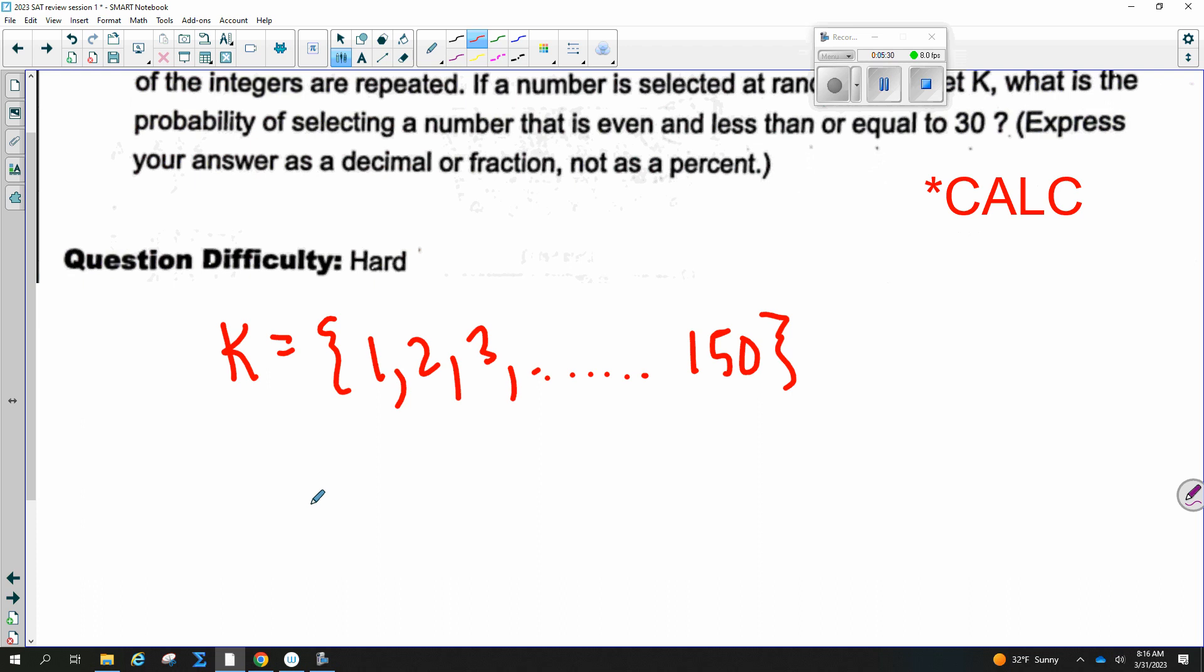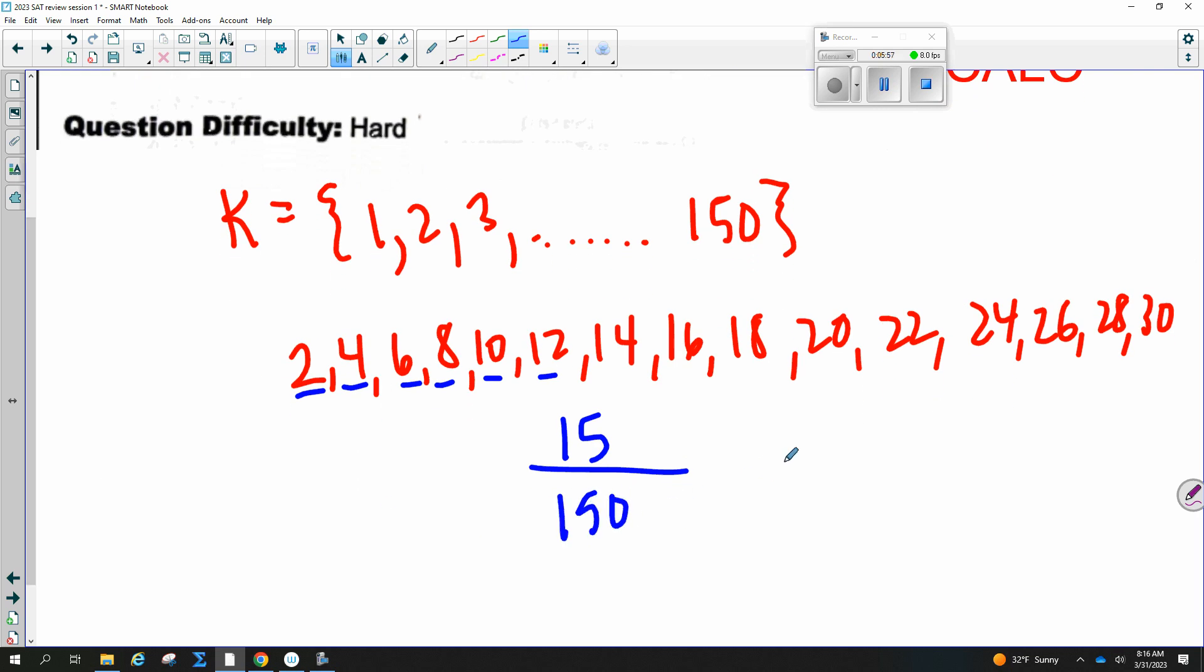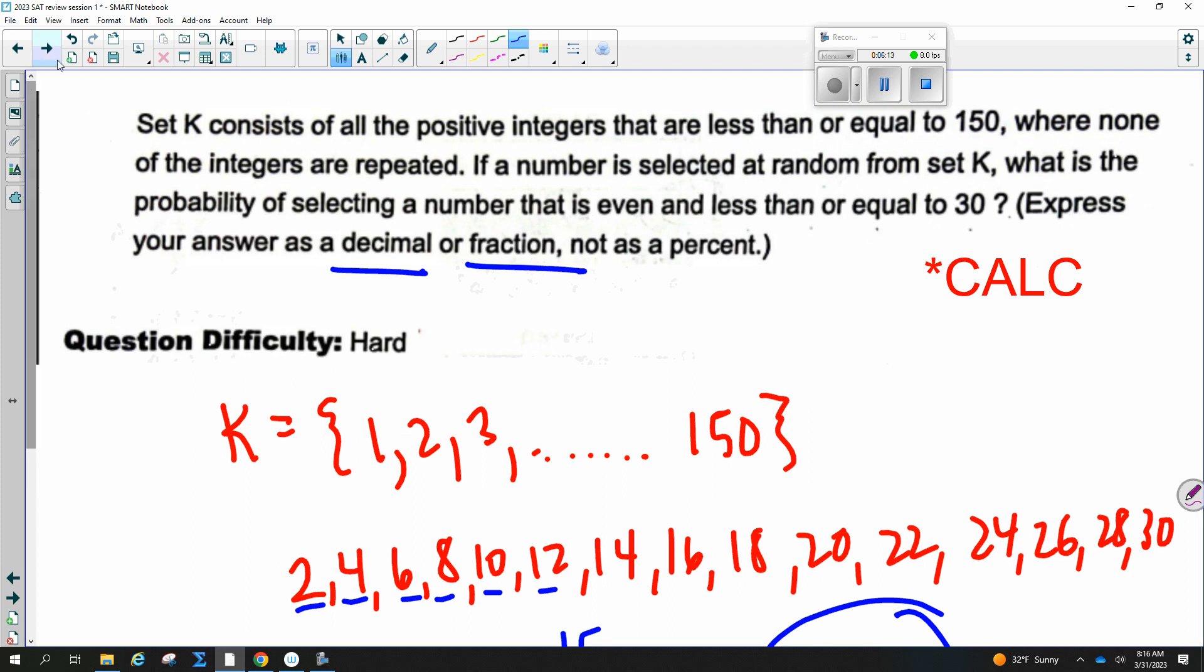So the even numbers that are less than or equal to 30. So how many are there? 2, 4, 6, 8, 10, 12, 14, 16, 18, 20, 22, 24, 26, 28, 30. There are 15 of those. And then it's out of the whole set of K, which is 150. And so that answer is just 10%. Or if you're plugging it in as a decimal, I think sometimes they have you write these as decimals. It says express your answer as a decimal or fraction, not as a percent.